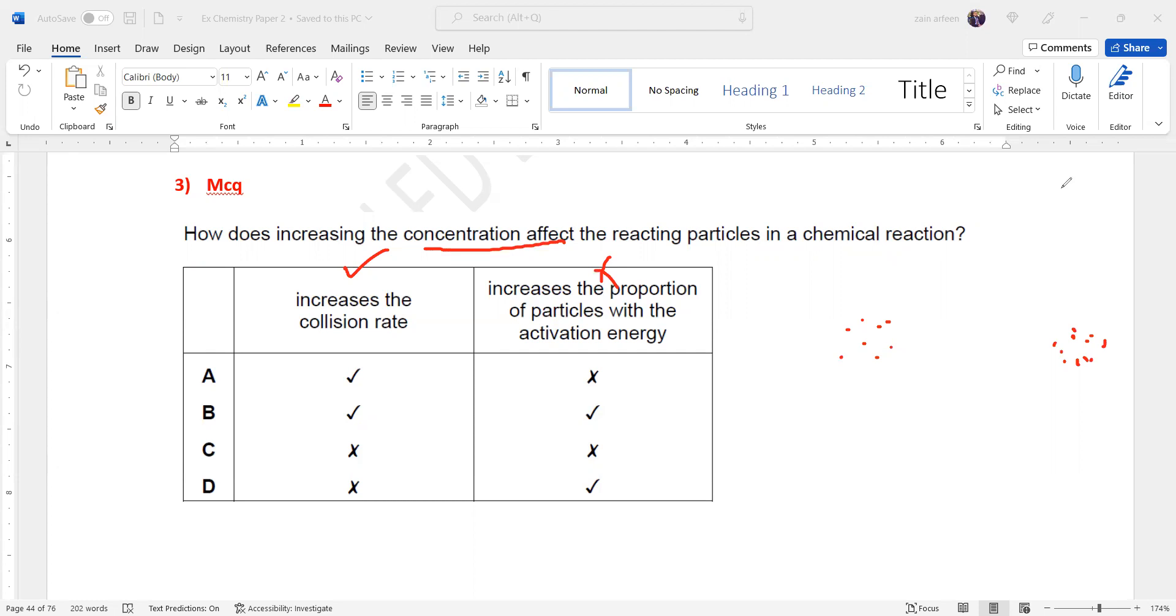And if we use a catalyst, catalyst also lowers the activation energy. So same thing happens. Greater proportion of the particles will have energy more than activation.